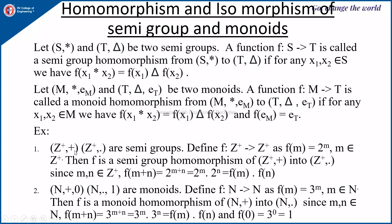For example, (Z+, +) and (Z+, ·) are semigroups. If you define f from Z+ to Z+ as f(M) = 2^M where M belongs to Z+, then f is a semigroup homomorphism from (Z+, +) into (Z+, ·), since f(M + N) = 2^(M+N) = 2^M · 2^N = f(M) · f(N).